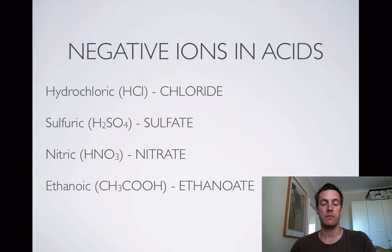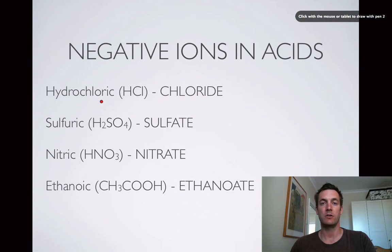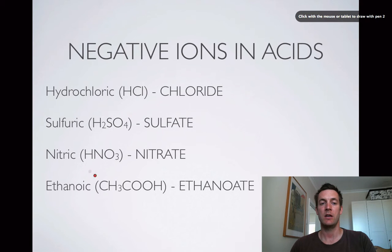Before we start looking at all those things, the negative ions that we find in acids get referred to quite a lot, so it's worth just looking at what they are. There's a chloride ion in hydrochloric acid, which means we often make chlorides when we use hydrochloric acid. There's a sulfate ion in sulfuric acid so we make sulfates, a nitrate ion in nitric acid so we make nitrates, and an ethanoate ion — CH3COO⁻ — so when ethanoic acid loses its H we've got an ethanoate ion. The negative ion in the acid is what's left after we've removed the H's, after the H⁺ of the acid has reacted.